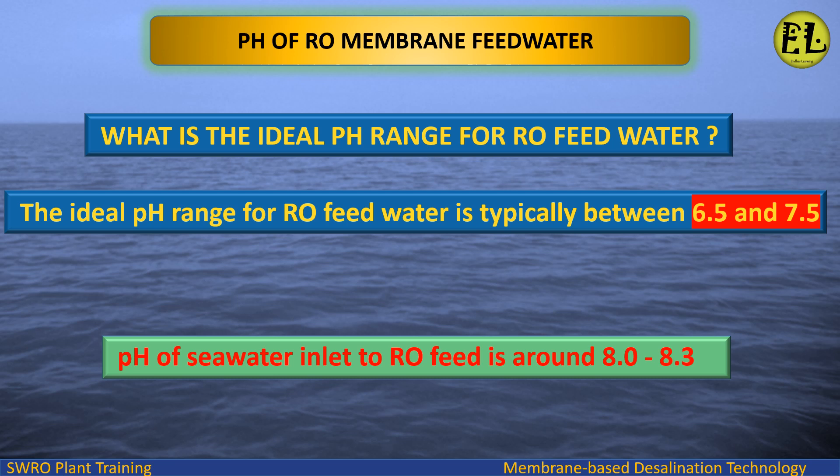The ideal pH range for RO feed water is typically between 6.5 and 7.5. The pH of seawater inlet to RO feed is around 8.0 to 8.3.